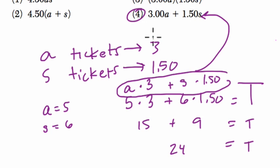They just wrote it the other way, 3 times A plus $1.50 times S. And those are equivalent because of the commutative property of multiplication. All right, hope this helped. Thank you.